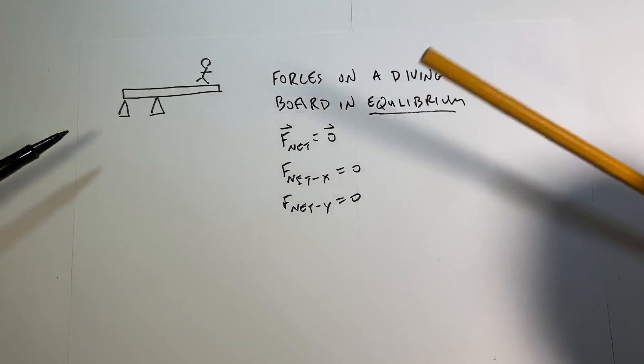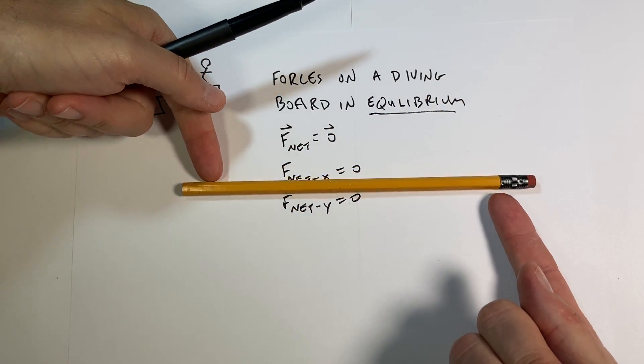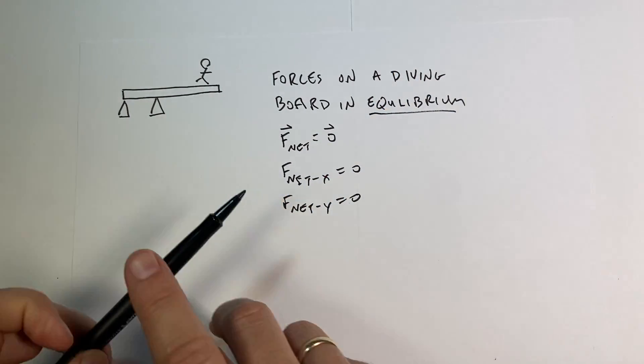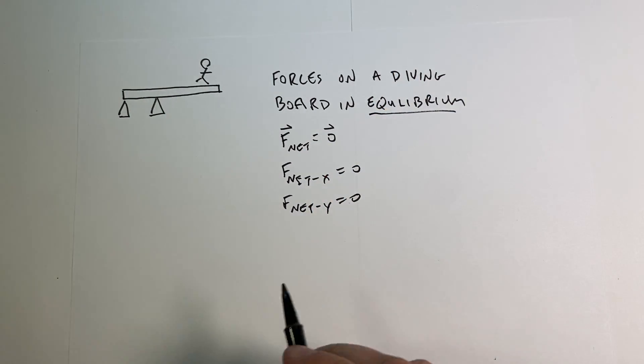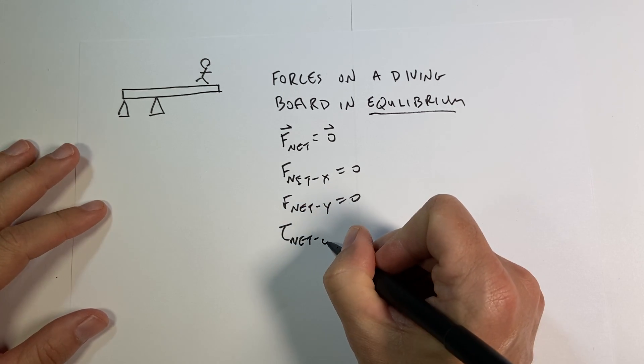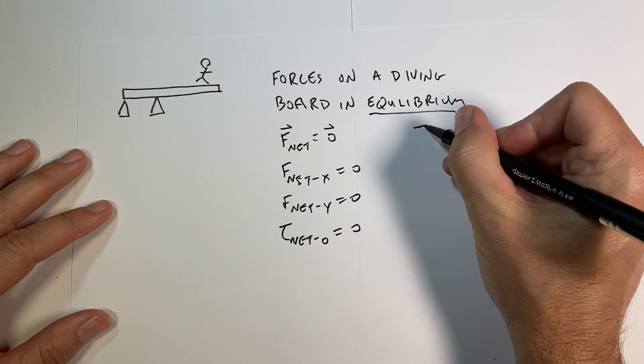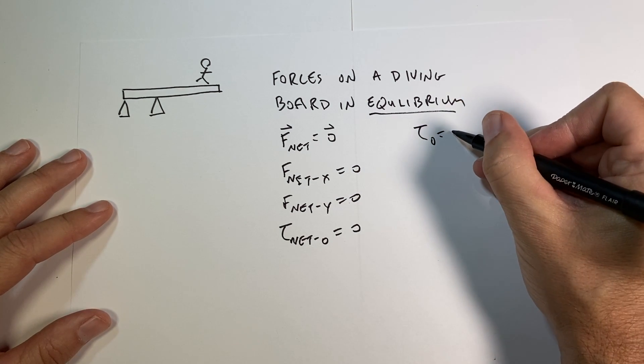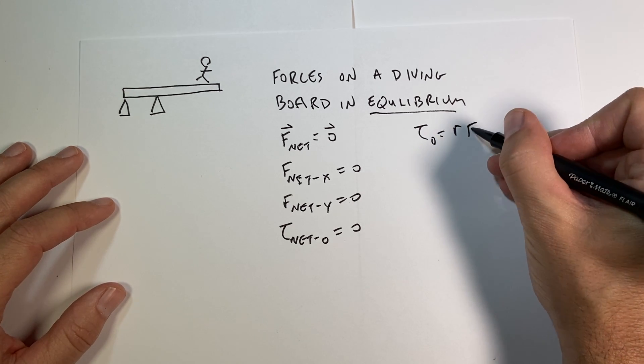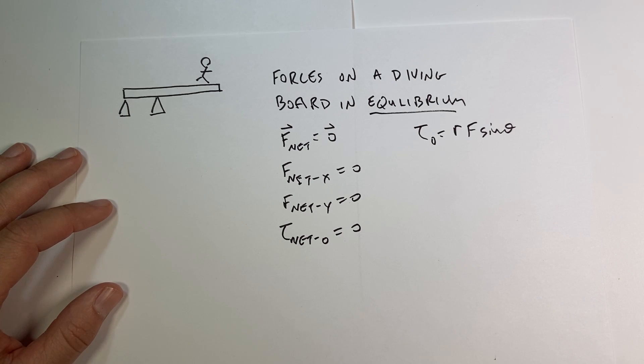But you can see here if I have a pencil and I push on it with equal and opposite forces like this, it still rotates. So this by itself is not enough once we consider an object to be a rigid object. We also have to say the net torque about some point is zero. And of course, remember, the magnitude of the torque is going to be equal to the magnitude of the distance from the force to the point times the force times the sine of the angle between them. And it's really a vector, but that's fine, good enough.